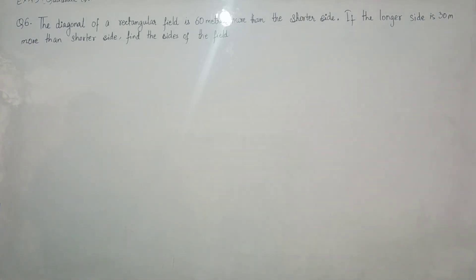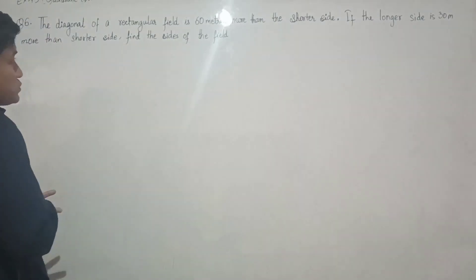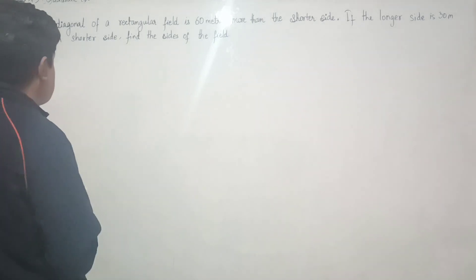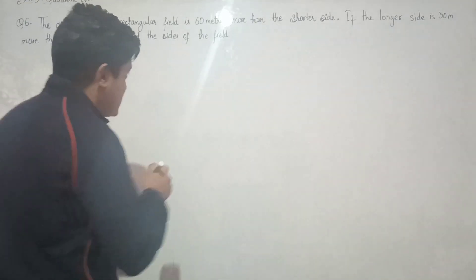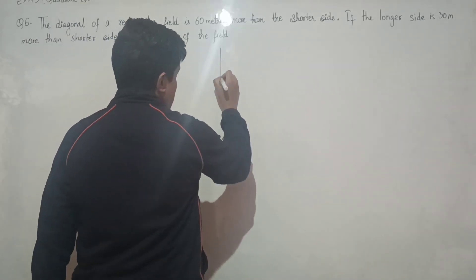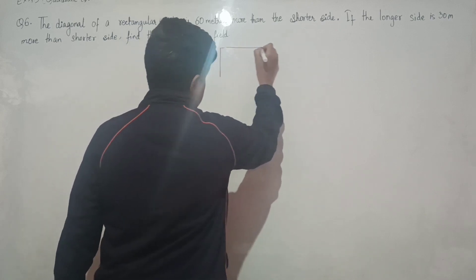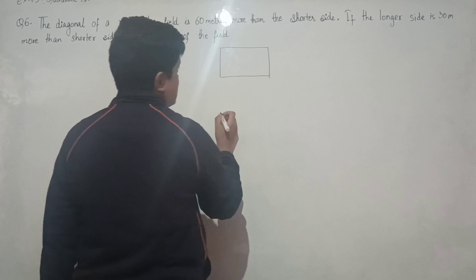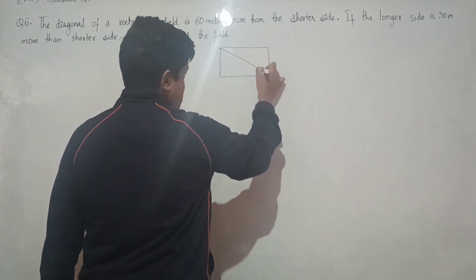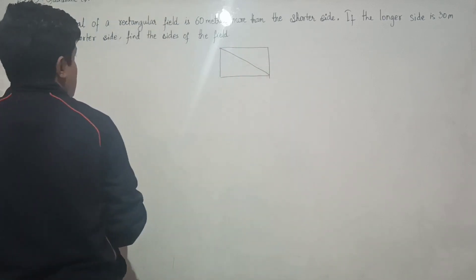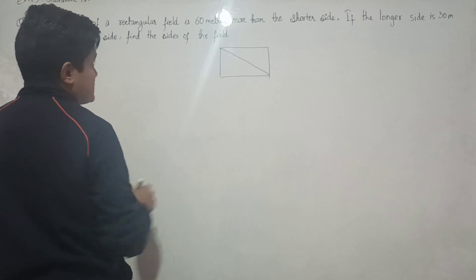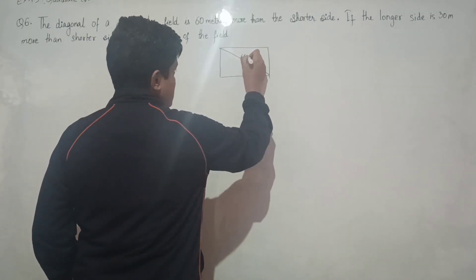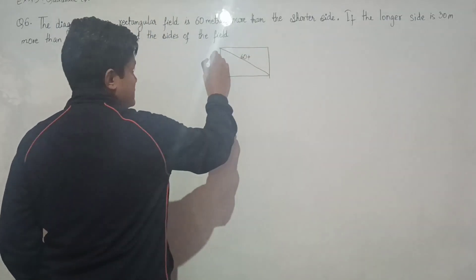Question number six: The diagonal of a rectangular field is 60 meters more than the shorter side. The shorter side is the breadth, so let us make a rectangle. The diagonal of a rectangular field is 60 meters more than the shorter side.